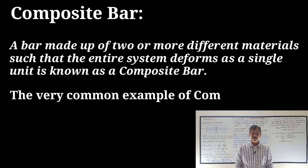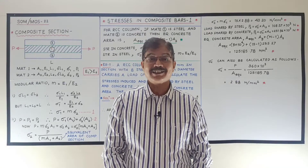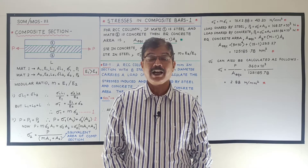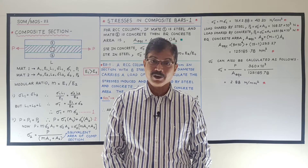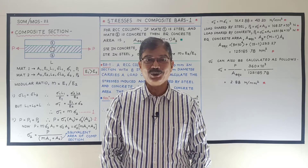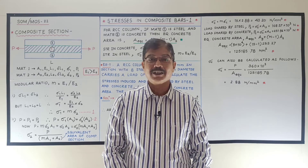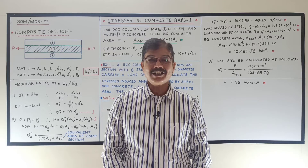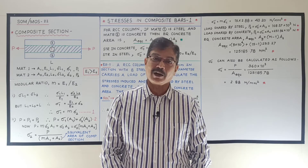The very common example of composite section or composite bar is an RCC column. In an RCC column, two different materials — concrete and steel reinforcement — are used. So when two or more different materials are used so that the entire section behaves as a single unit, then it is known as composite section.